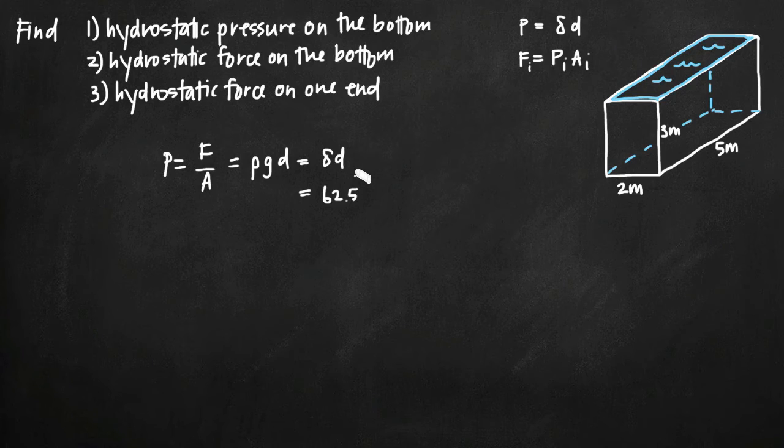We just need to multiply 62.5 times the depth. In this case, the depth is 3 meters because we've been asked to find the hydrostatic pressure on the bottom of our tank and our tank is 3 meters deep. We may have been asked to find the hydrostatic pressure 2 meters underwater, in which case that wouldn't be the bottom of the tank.